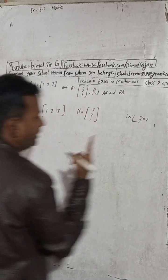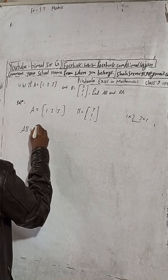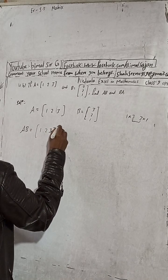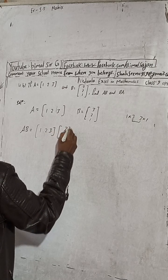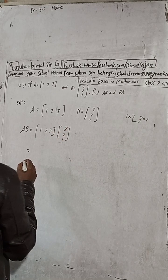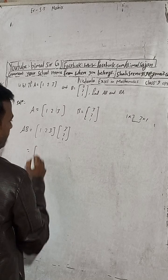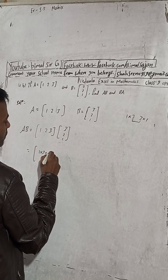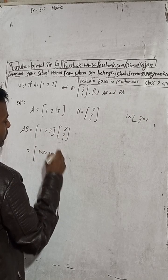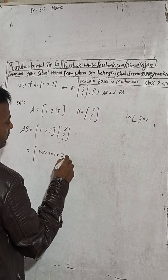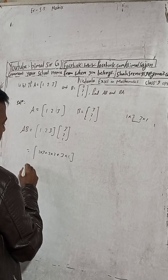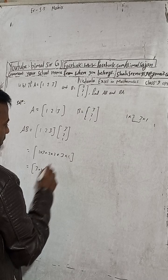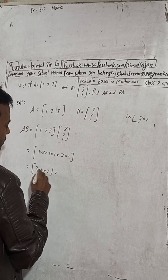The answer will be a 1×1 matrix. So right here: [1, 2, 3] and then [3, 2, 1]. Now compute: 1×3 plus 2×2 plus 3×1. So the answer is: three ones are three, plus two twos is four, plus three ones are three.